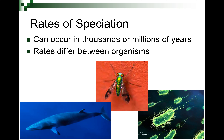What about rates of speciation? It can occur over thousands or millions of years depending on the rate of reproduction in the organisms. This fly can breed much faster than a whale species, and bacteria faster than either. The possibility to speciate in bacteria is much higher than in the fly or the whale, and you actually see this — there are far more species of bacteria than of this type of fly than of this group of whales.